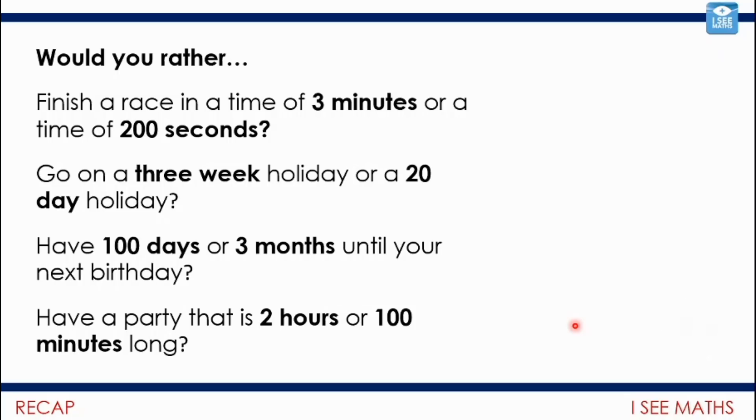Let's have a look. Finish a race in a time of 3 minutes or 200 seconds? Each minute is 60 seconds, so 3 minutes is 180 seconds, that'll be faster than 200 seconds. Go on a 3 week holiday or a 20 day holiday? 3 weeks is 3 lots of 7 days, so that's slightly longer. 100 days or 3 months until your next birthday? 3 months is around about 30 days a month, so it's about 91, 92 days, a bit closer than 100 days away. A party 2 hours long or 100 minutes long? 2 hours is 2 lots of 60 minutes, so that'll be slightly longer.